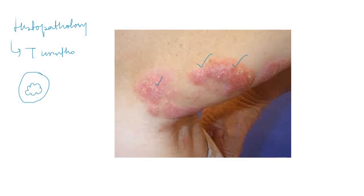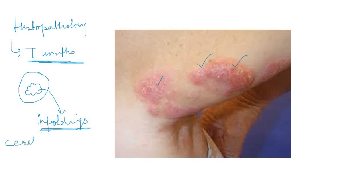The nucleus is called cerebriform because it looks like the cerebrum — it is due to infoldings present in the nuclear membrane. On histopathology we see T lymphocytes with this characteristic cerebriform nucleus, and these cells are called cerebriform cells. The term cerebriform is derived from cerebrum because the nucleus has infoldings like the cerebrum.